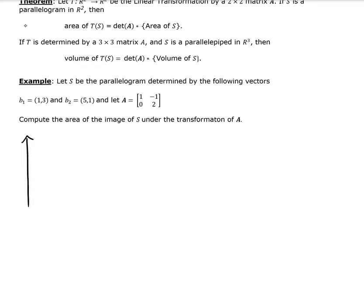B1 is (1,3), so we'll place that here. This is your X axis and this is your Y axis. So (1,3) goes here—1, 2, 3. There's my vector. And then let's plot B2 at (5,1). So 1, 2, 3, 4, and 5.